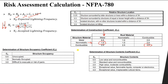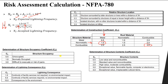C4 is the structure occupancy coefficient. If the structure is unoccupied, it gets a low value. If normally occupied, it's moderate. For difficult-to-evacuate buildings — like hospitals with patients — we choose the highest factor of 3. As occupancy difficulty increases, C4 increases and the accepted lightning frequency decreases further.